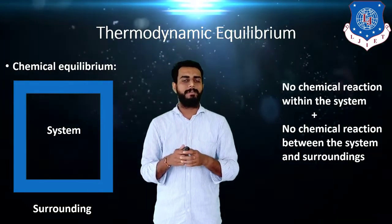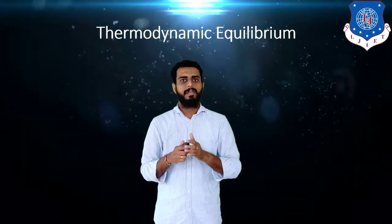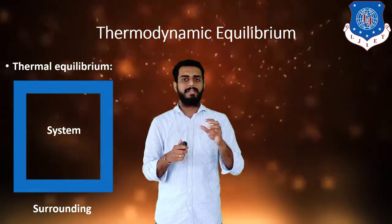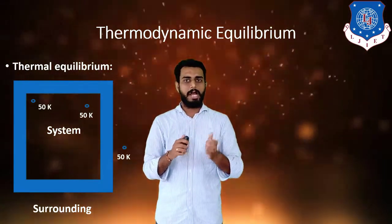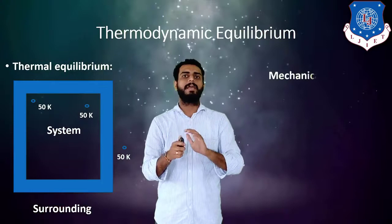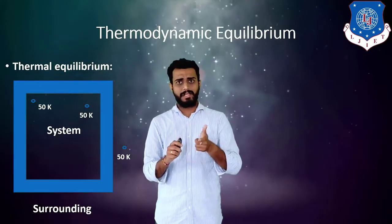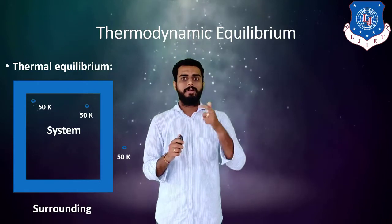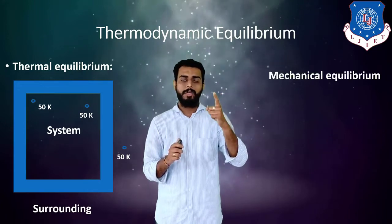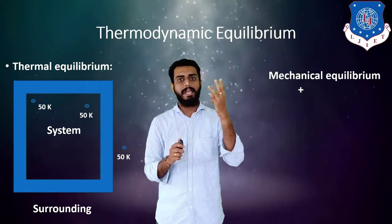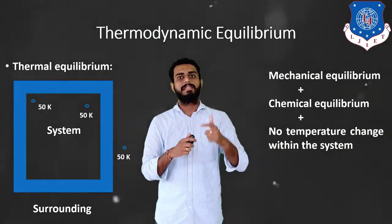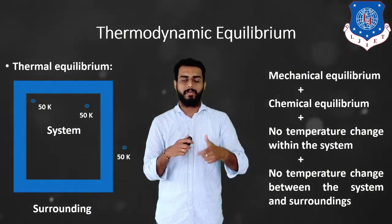The third and very important kind is thermal equilibrium. If the temperature inside the system — say 50 Kelvin — is the same as outside the system, then there is no temperature change within or between the system and surrounding. But to achieve thermal equilibrium, two prerequisite conditions are required: you must have mechanical equilibrium and chemical equilibrium first. Then, with no temperature difference, it will be called thermal equilibrium.